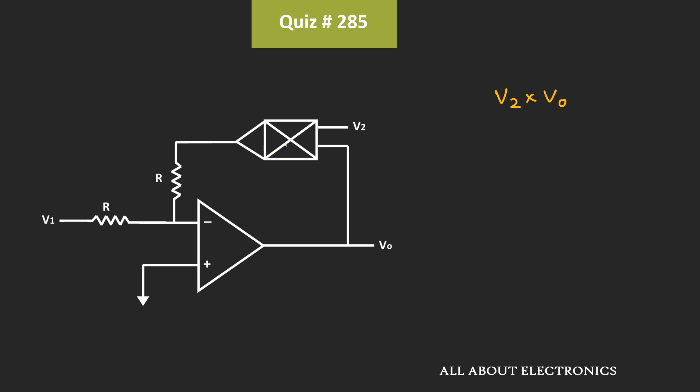Let's say the output of this voltage multiplier is equal to Vx. So we can say that Vx is equal to V2 times V0.